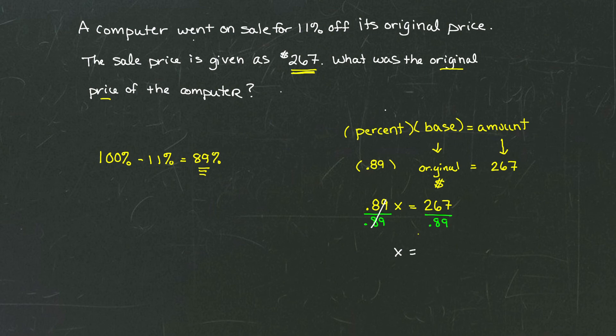And x is equal to 267 divided by 0.89. Pulling out a scientific calculator, or just a simple calculator, we get that x is 300. That means the original price for the computer was $300.